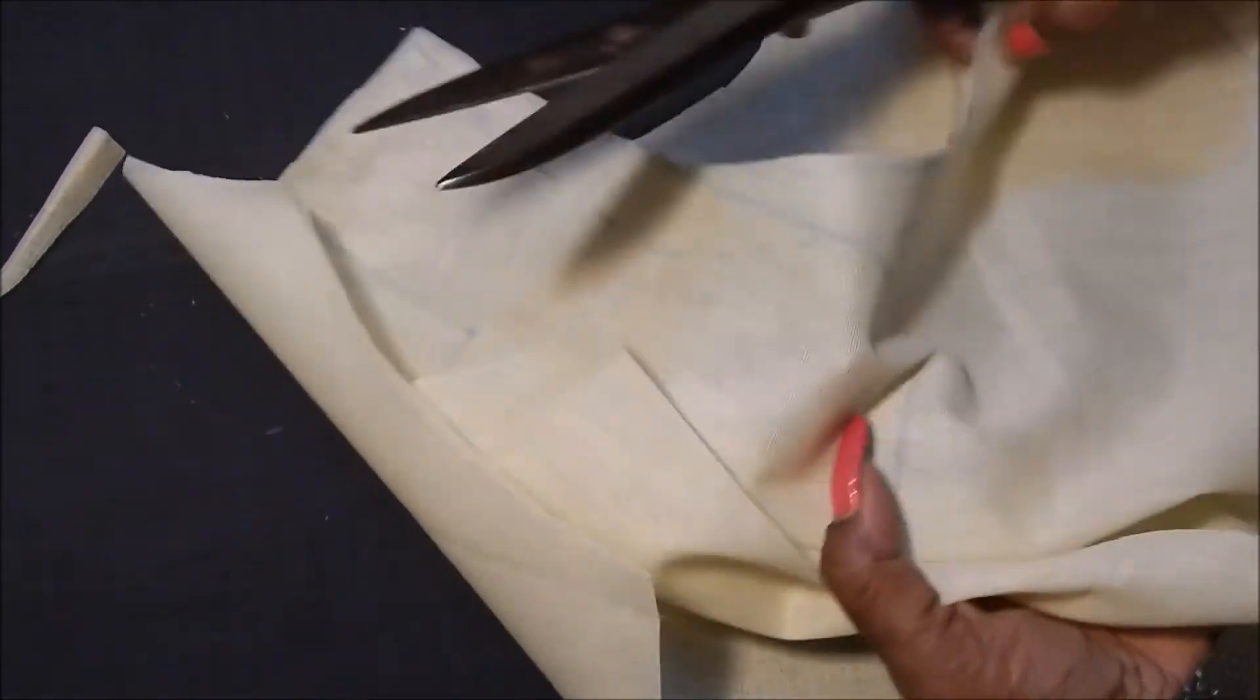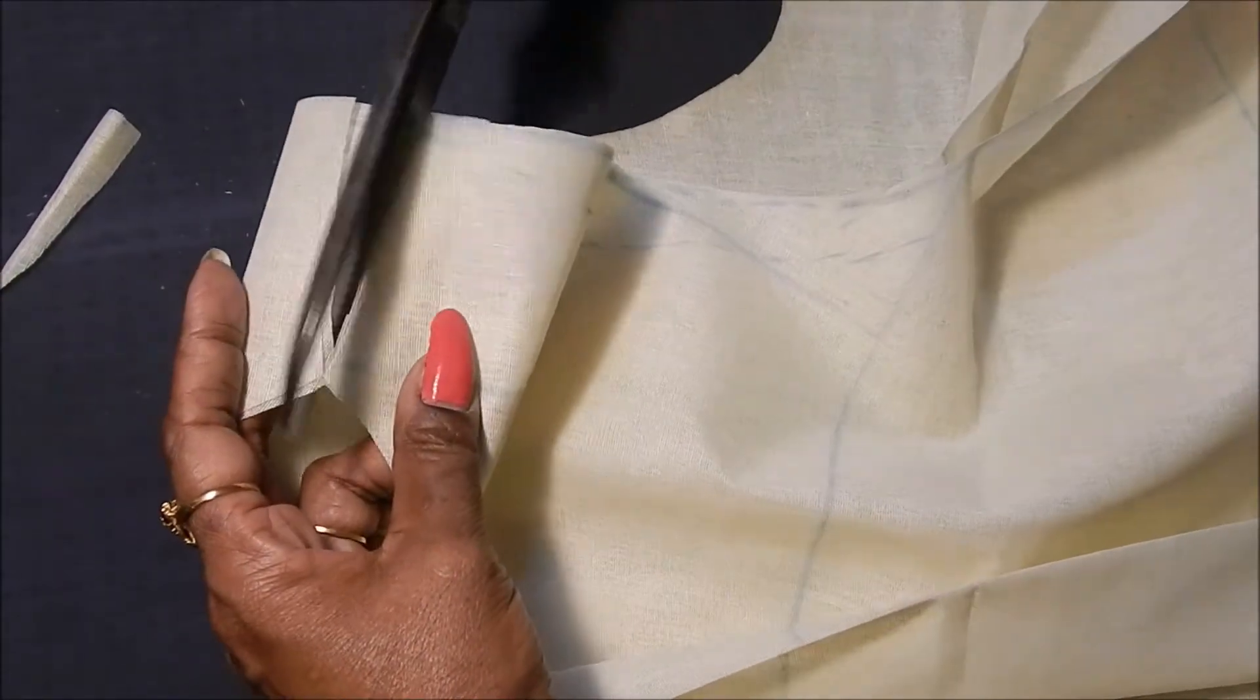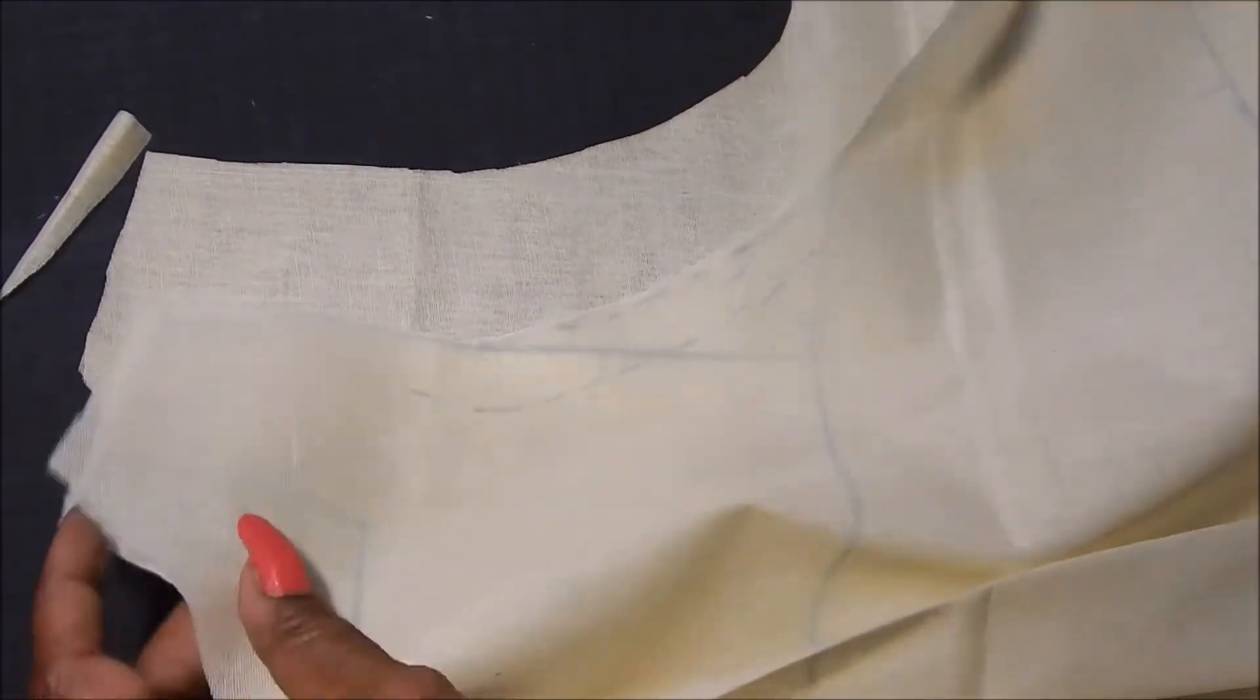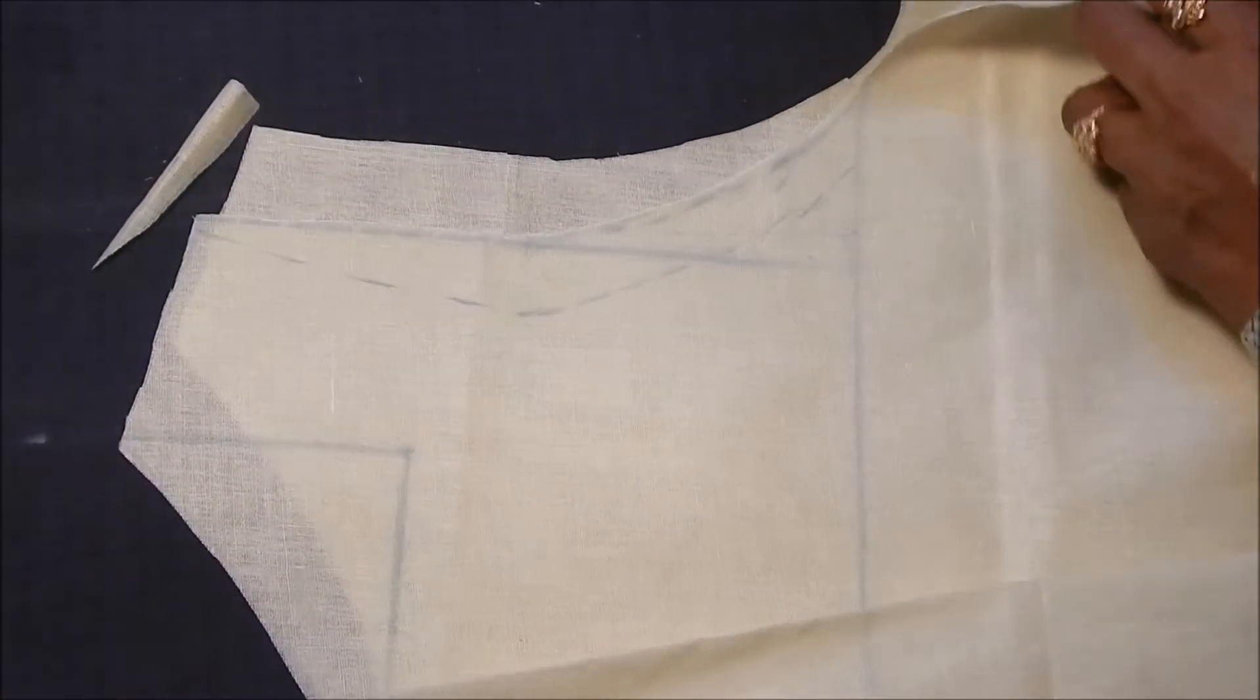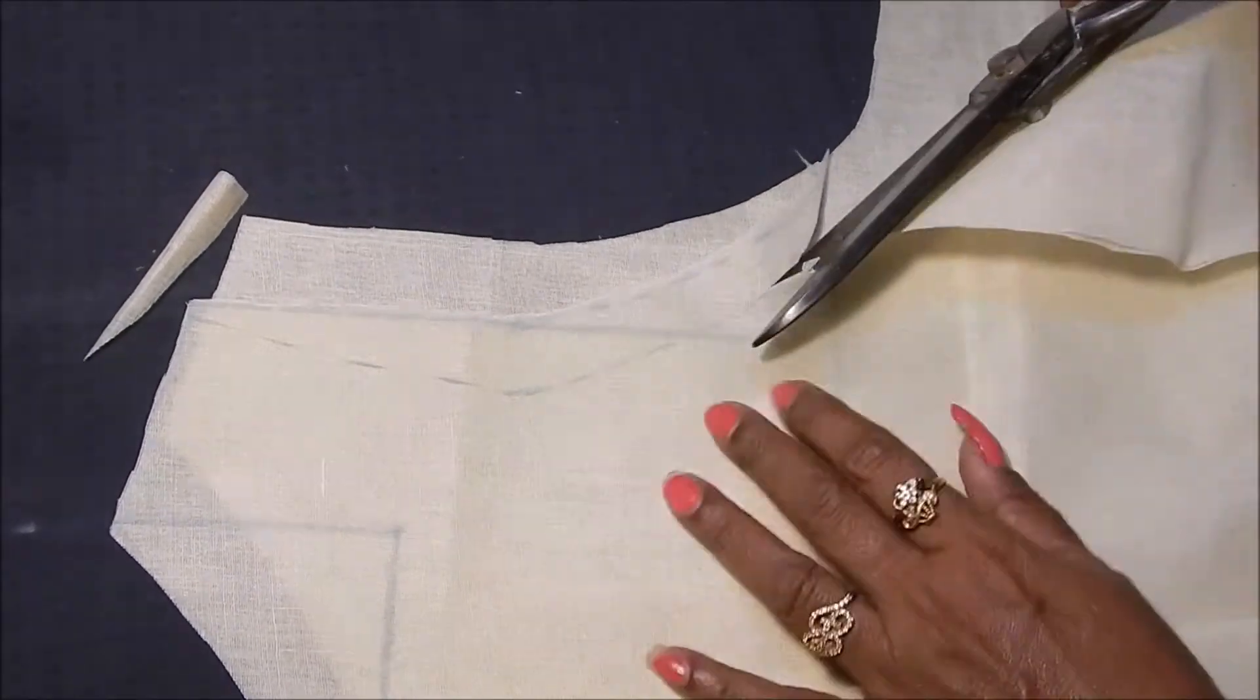Then we will cut half inch shoulder slope. Now lift only the top front layer and cut front armhole shape.